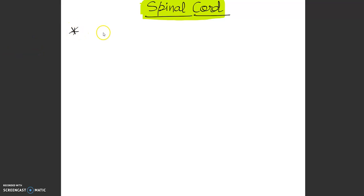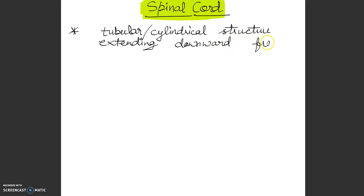If we talk about spinal cord, this is a tubular, oblique cylindrical structure which is extending downwards from medulla oblongata, extending downwards from medulla oblongata.